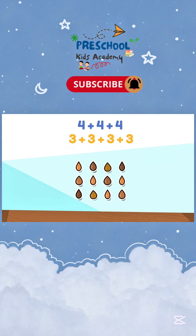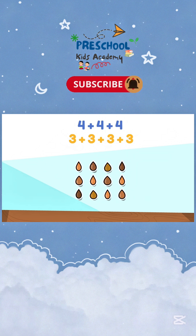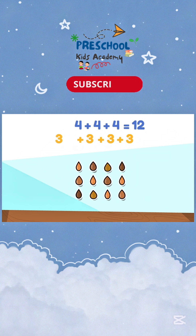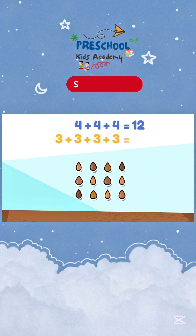Both equations tell us how many seeds there are. Four plus four plus four is twelve. And three plus three plus three plus three is also twelve.